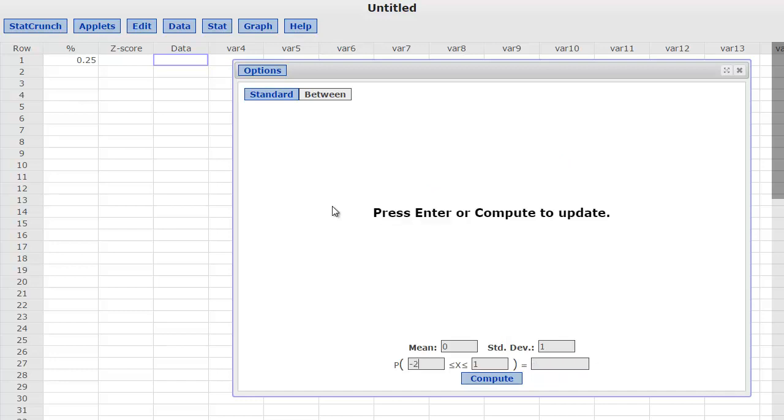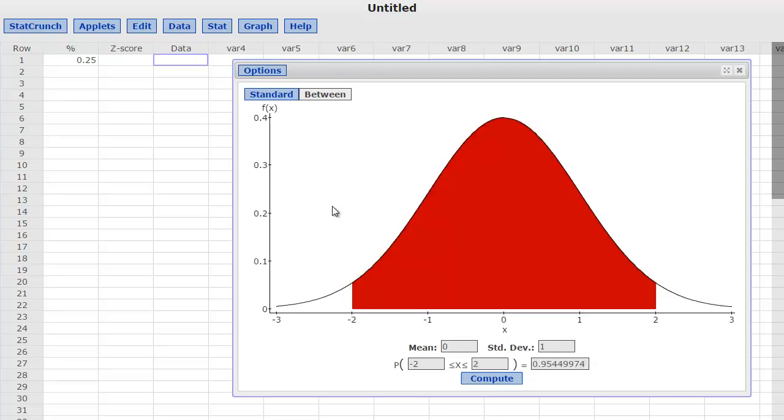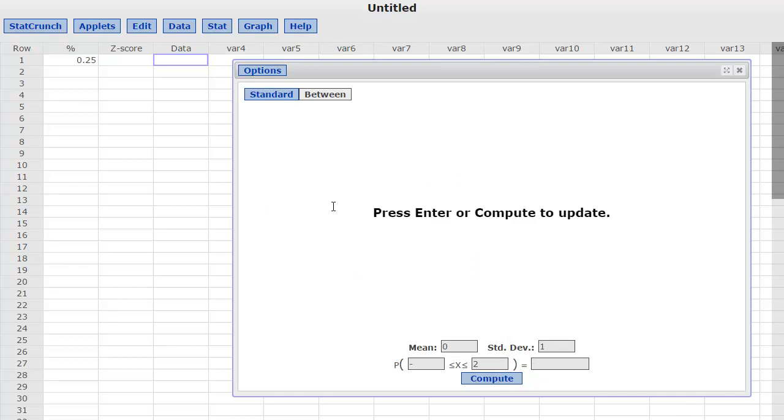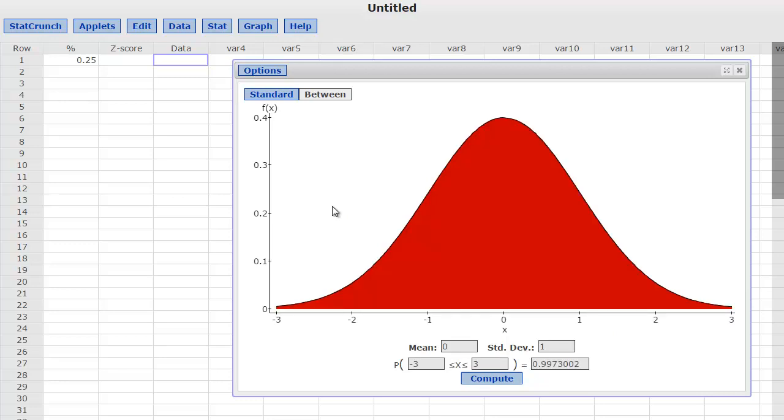And of course, if I go from negative 2 to 2, you can actually visualize 95% of the data from negative 2 to 2 standard deviations. And of course, if you go from 3 to 3, you'll get the 99.7% of the data from the empirical rule. And you can see basically the whole curve is red. So that was the between function.